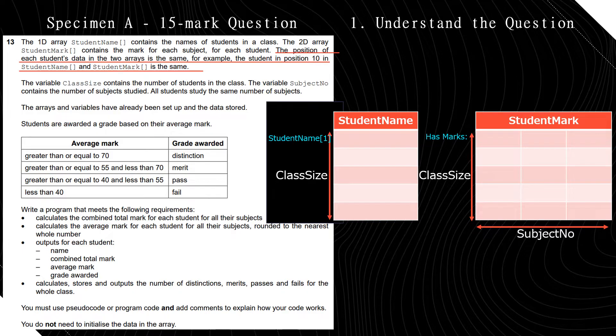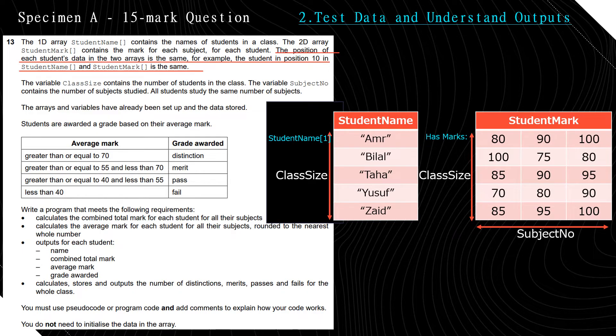Let's look at some possible test data. So here's some test data. We have student name. Its class size is equal to 5. So I have Amr, Bilal, Taha, Yusuf, and Zaid. Amr has these marks in student marks. So I'm saying subject number, I'm assuming, I'm just making some test data. Subject number is equal to 3.